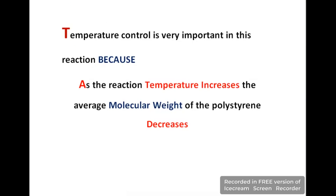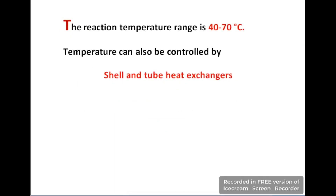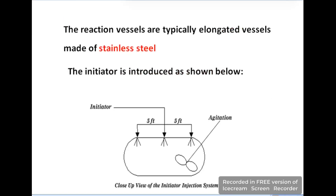We are using four reactors and we will maintain the temperature at 15°C. Temperature control is a very important factor because as the reaction temperature increases, the molecular weight of the polystyrene decreases. The temperature range is controlled between 40 to 70°C, and that control is obtained with the help of a shell-and-tube heat exchanger, as seen in the process flow diagram.